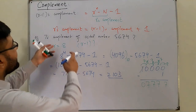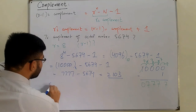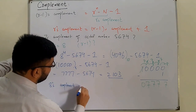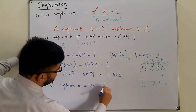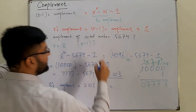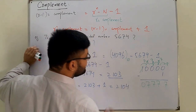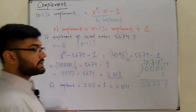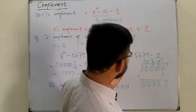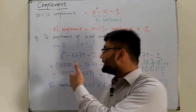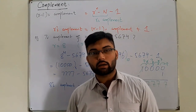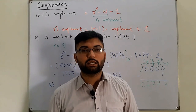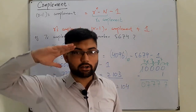And since we know that R's complement equals R-minus-1's complement plus 1, we can find the 8's complement of 5674 by adding 1: 2103 plus 1 equals 2104. So the 8's complement of octal 5674 is 2104. I hope the basic understanding of R's complement and R-minus-1's complement is now clear. I'll be ending this lecture here; if you have any doubts, ask in the comment section. Thank you very much for watching — see you in the next lecture, inshallah. Take care!